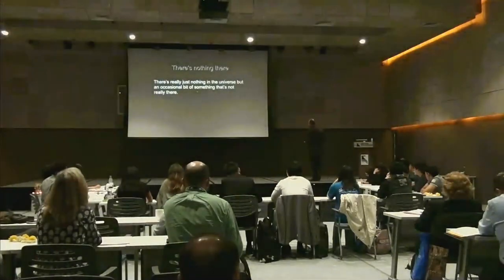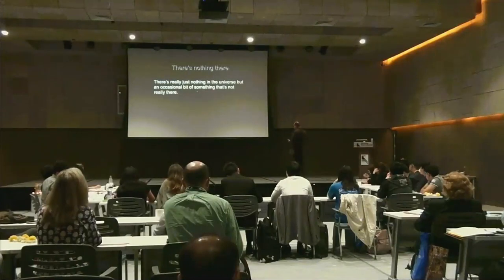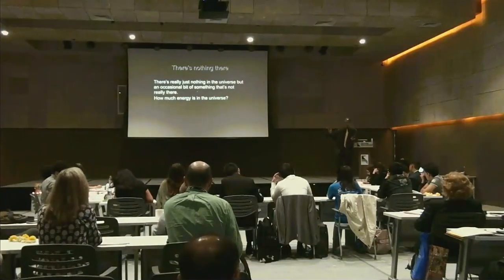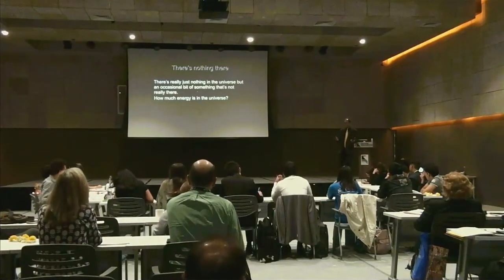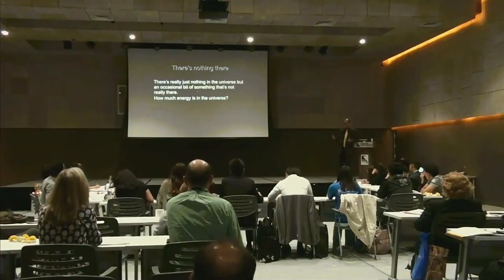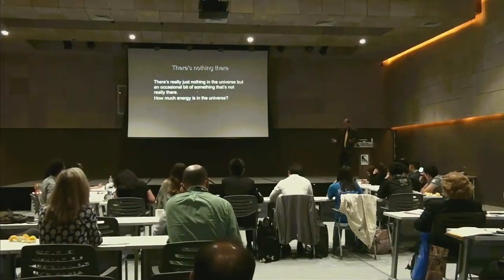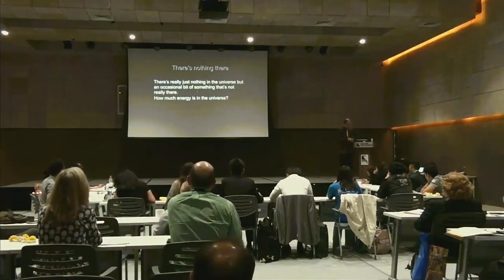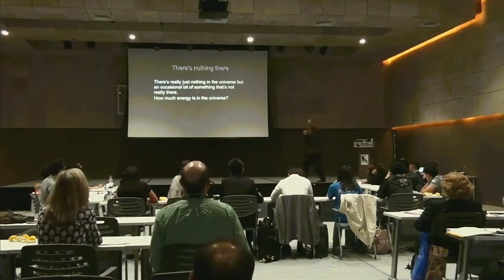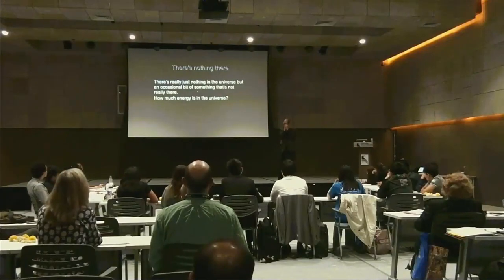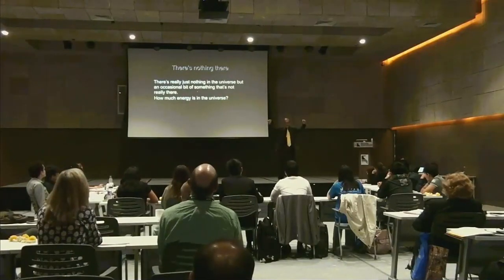So there's really just nothing in the universe but an occasional bit of something that's not really there anyway. How much energy is in the universe? Big bang — you got a universe. Where did all the energy come from? Energy can't finally be created or destroyed — thermodynamics. So where did all the energy come from? Here's what we think the universe did: it took no energy and turned it into two types of energy.